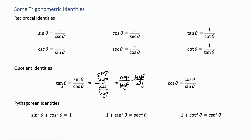These quotient identities are going to be very useful later on because we'll be able to memorize the sine and cosine of angles pretty quickly—there are some nice patterns. If you know sine and cosine, then using the quotient identities and the reciprocal identities, you can find the other four trigonometric functions.